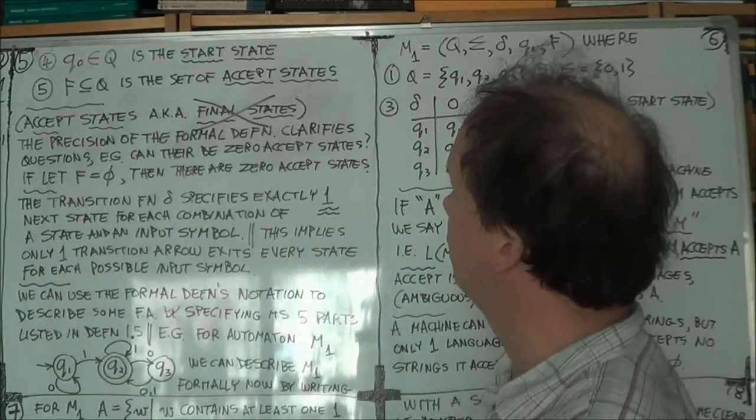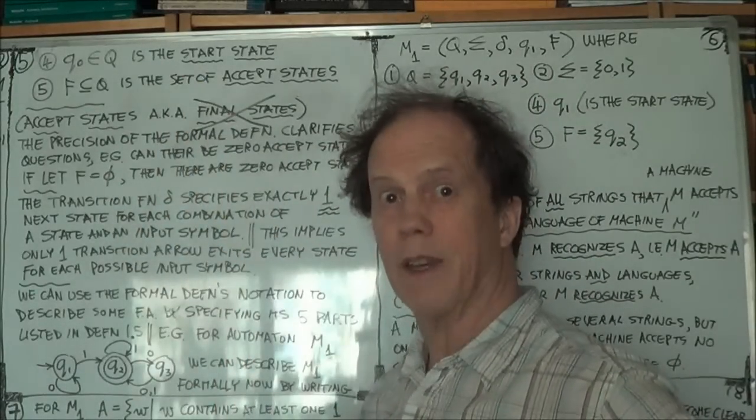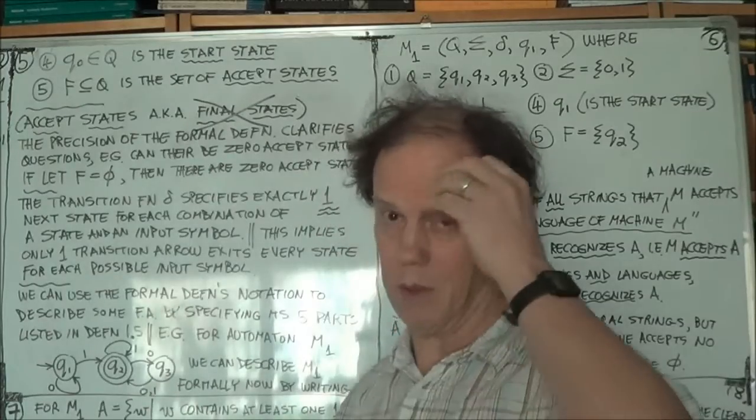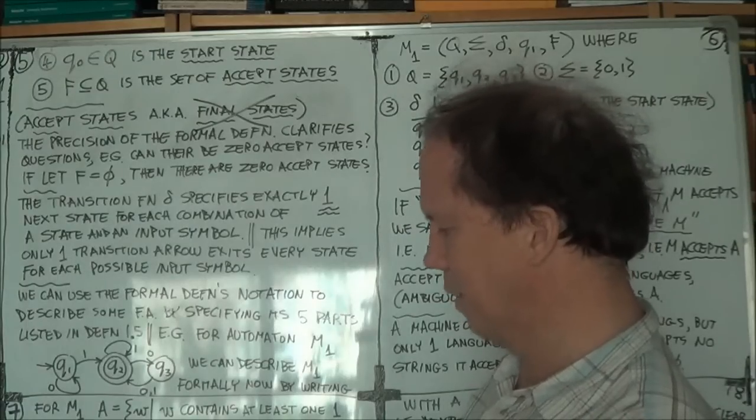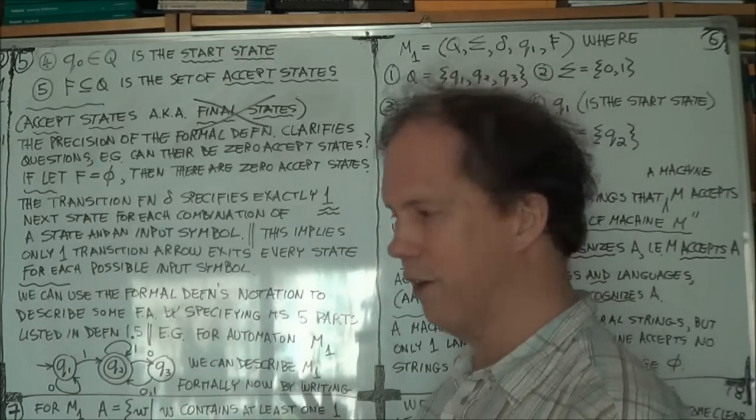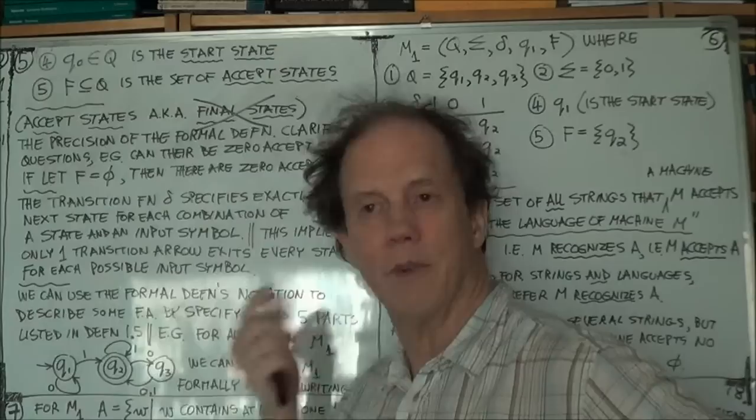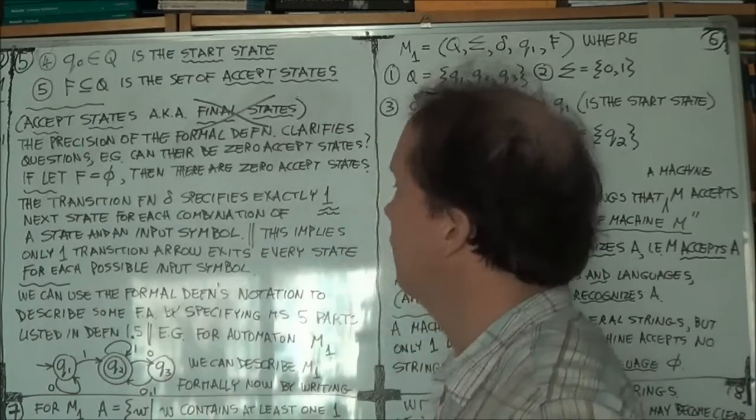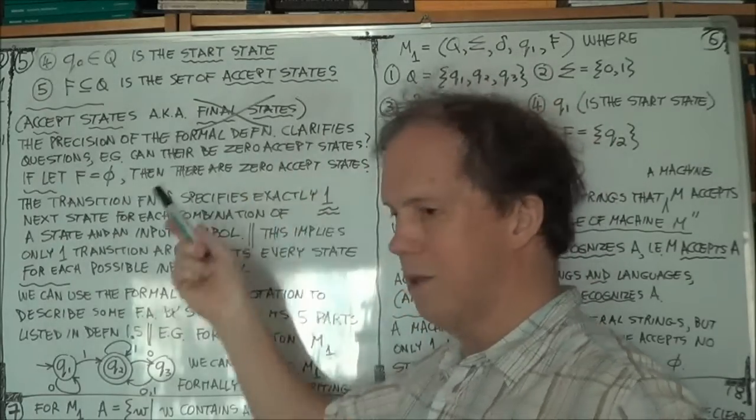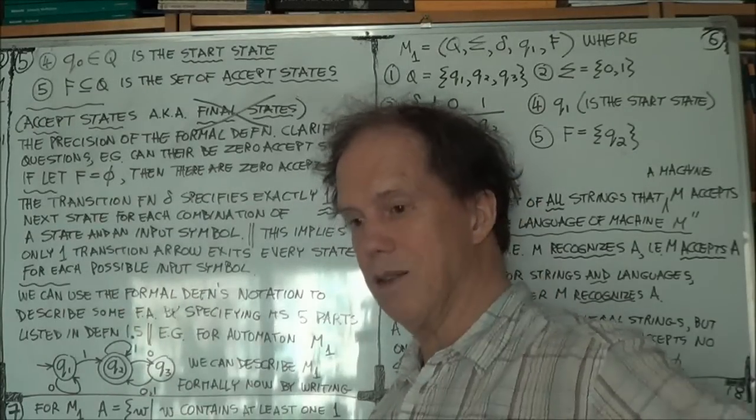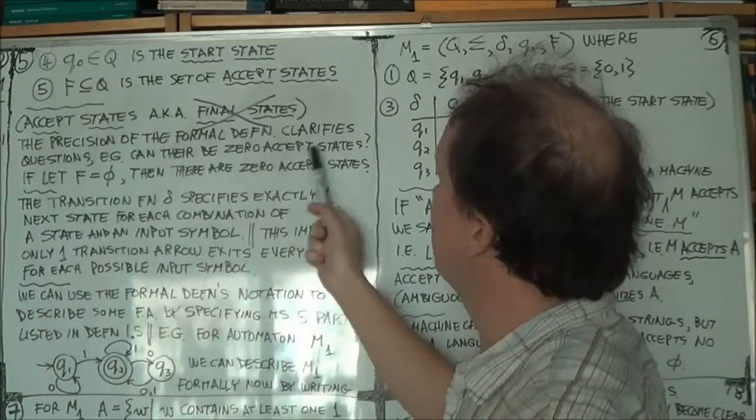Now I made this point a bit before, but now we can do it in a bit more detail, because now we have the specific formal definition as a five tuple in terms of Q, capital Q, capital sigma, delta, Q naught, and capital F. And we have this five tuple that describes, specifies, defines the automaton that you're talking about. And we'll do some actual examples a bit later. Now once you have that precision, because the formal definition is quite precise, you can now answer certain ambiguous questions. Like for example, can you have zero accept states? Is that possible?